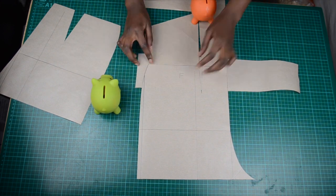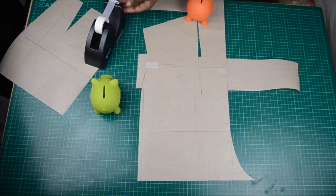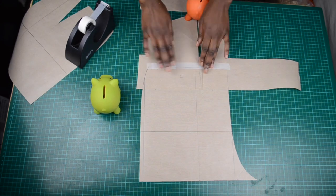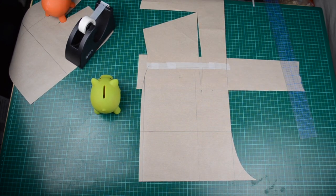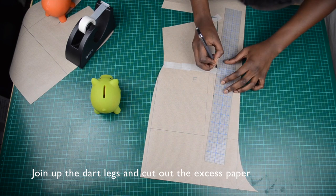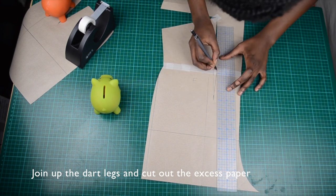Attach some scrap paper underneath and tape in place. Close the gap at the center front with your pencil. Draw up your dart legs then cut out the excess paper between the darts.